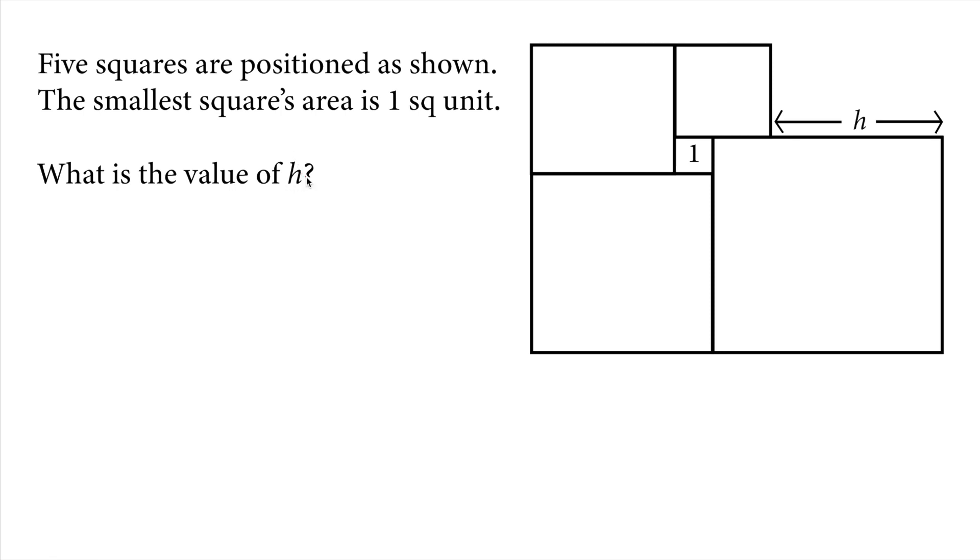Hi there, in this video we will solve this sixth grade math Olympiad problem. Let's read the question: five squares are positioned as shown, the smallest square's area is one square unit. What is the value of h? So h is this distance right here, it's part of the big square.